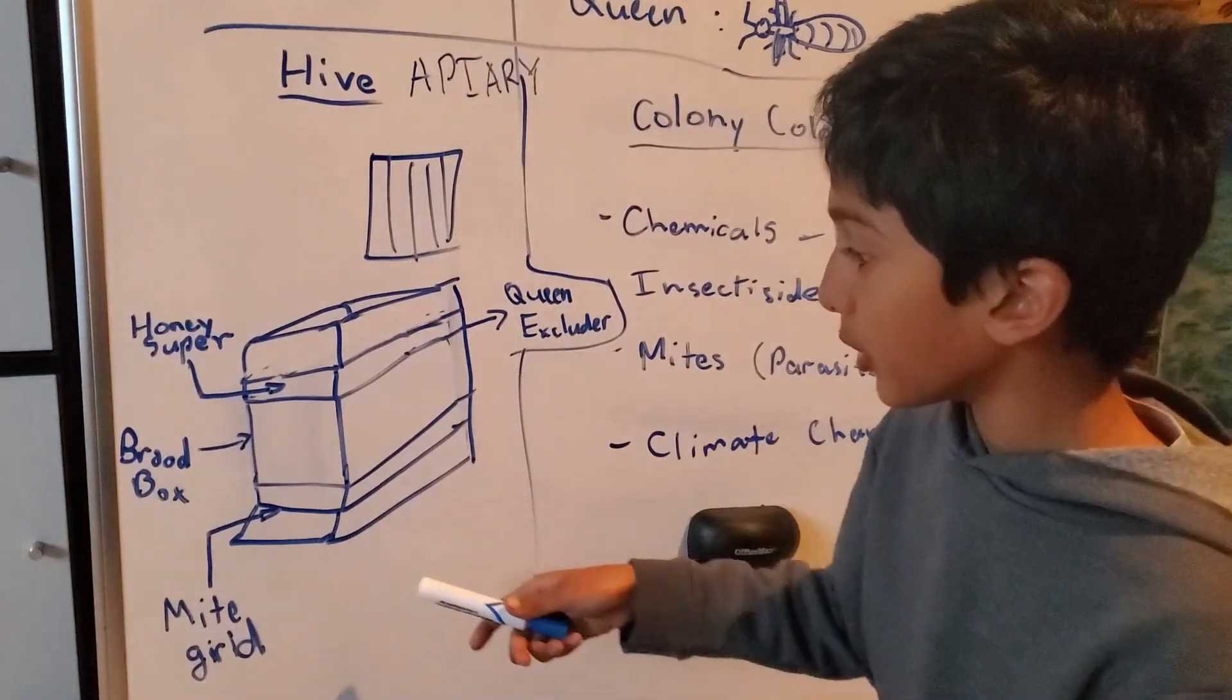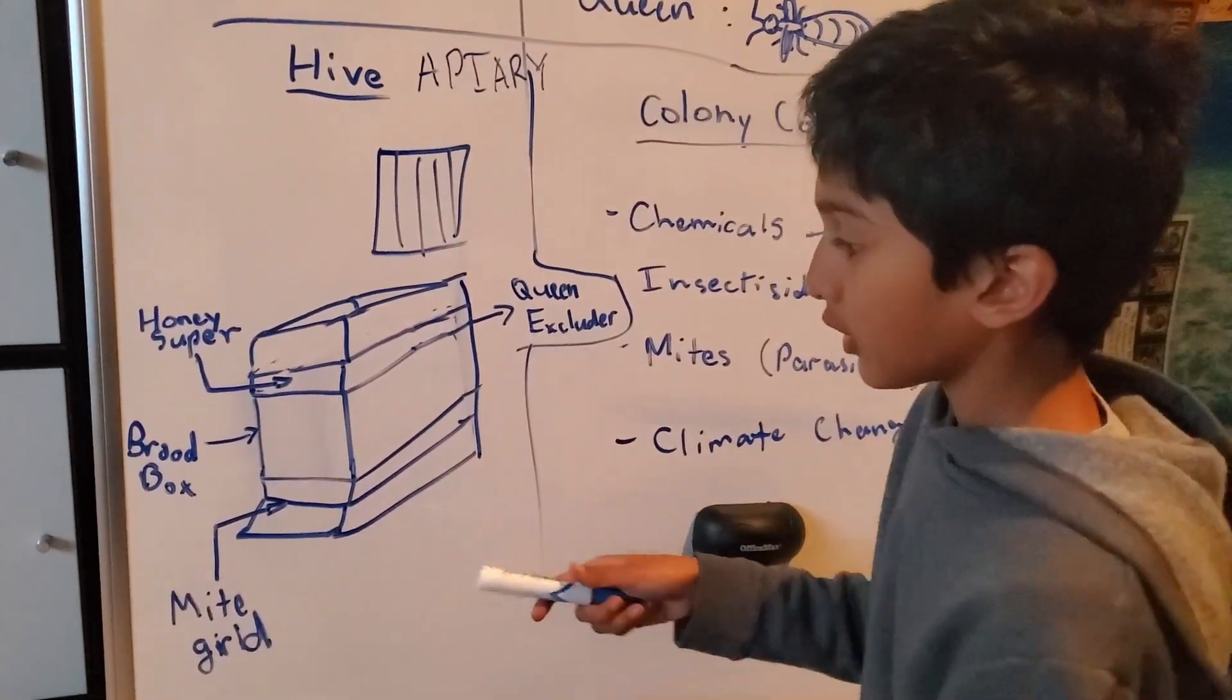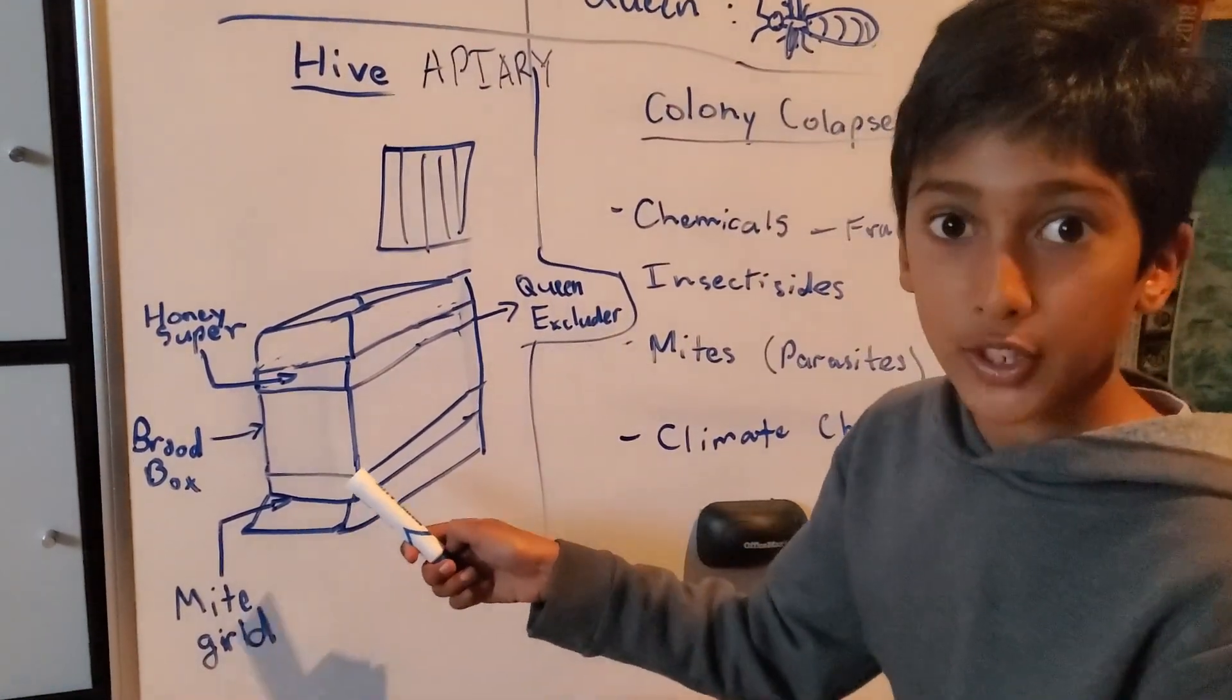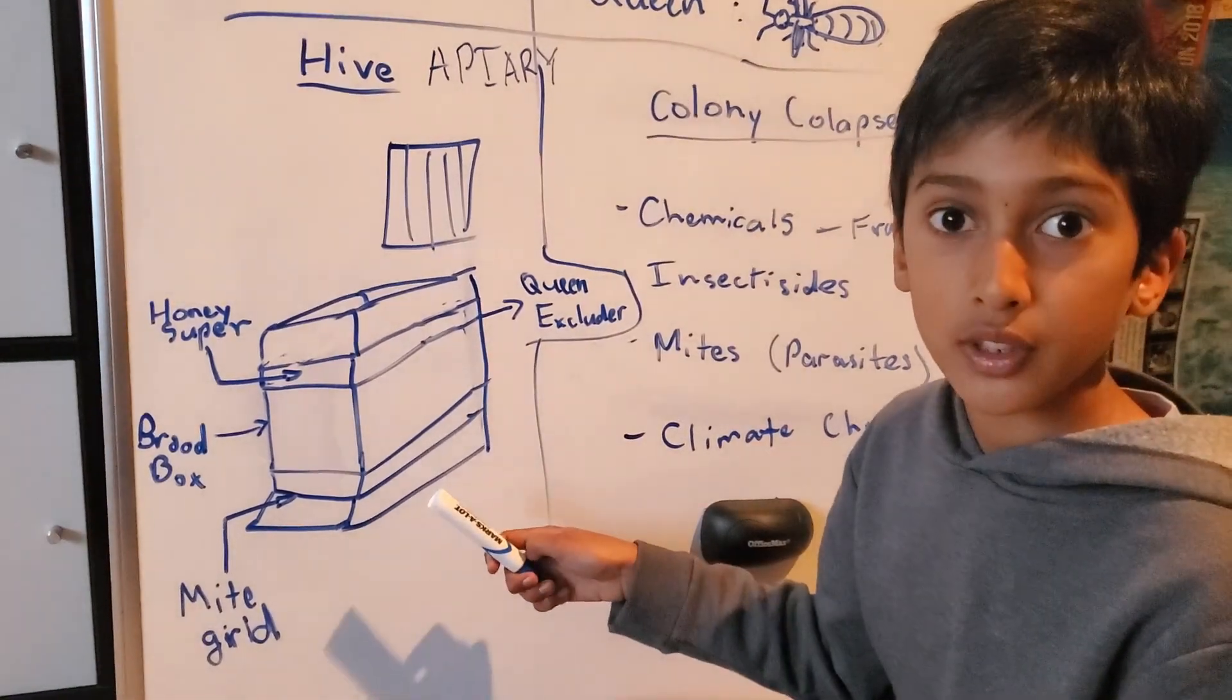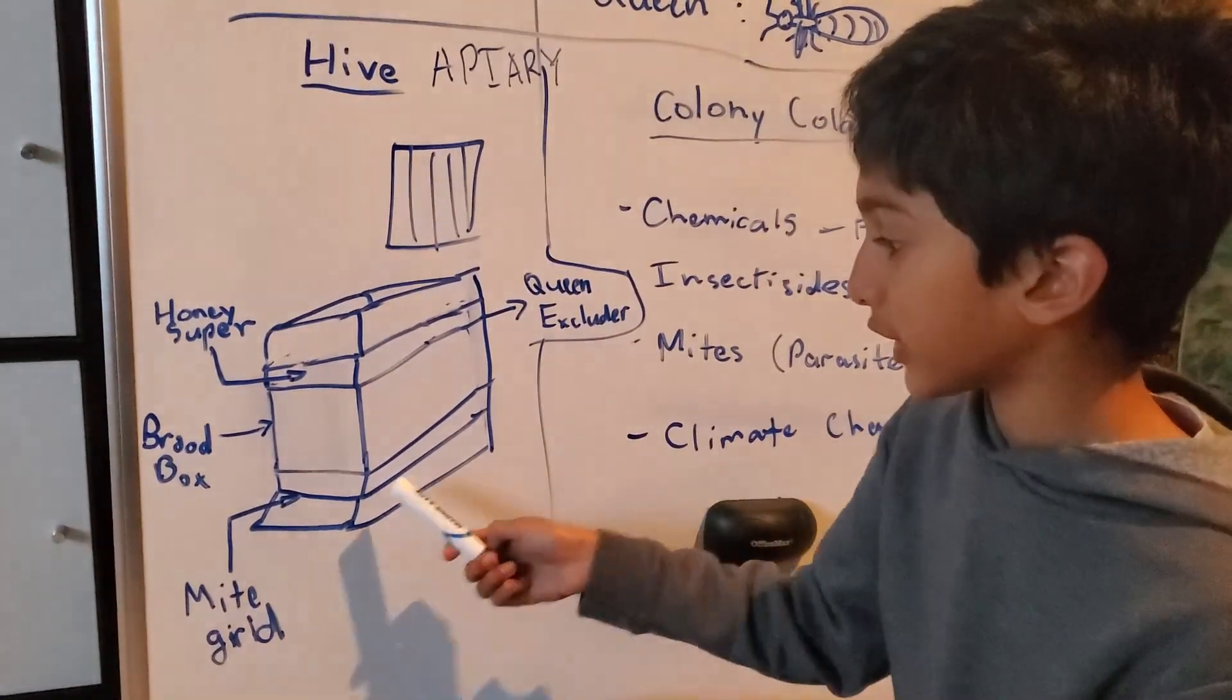Right at the bottom, we put a mite grid there. This collects all of the dust particles and any possible mites so we can spray something to get rid of them.